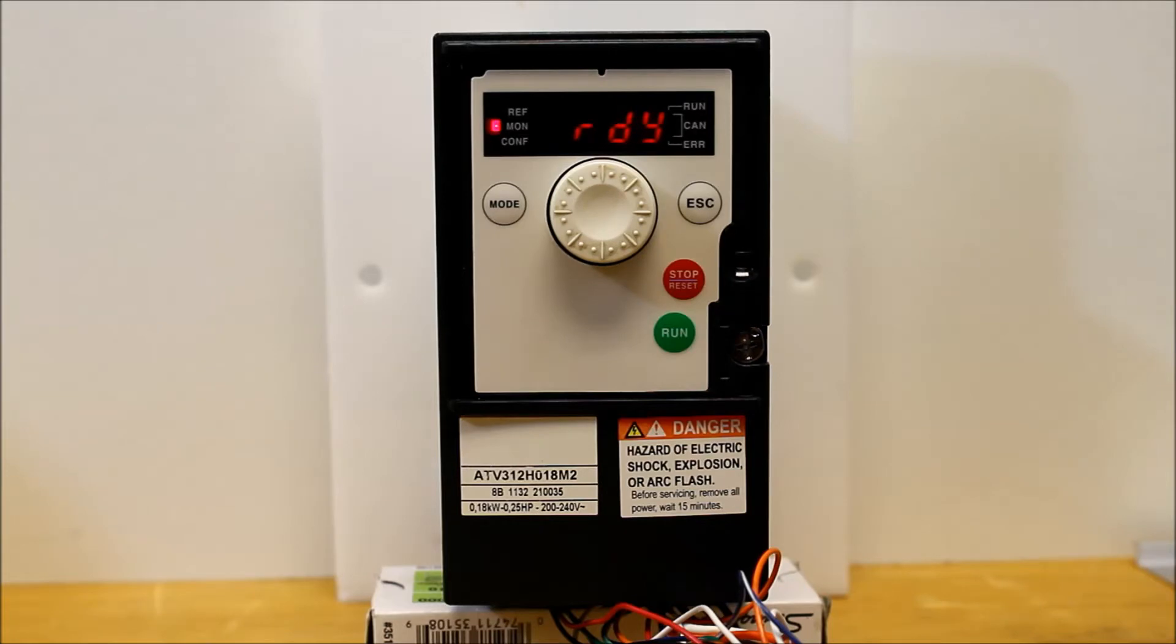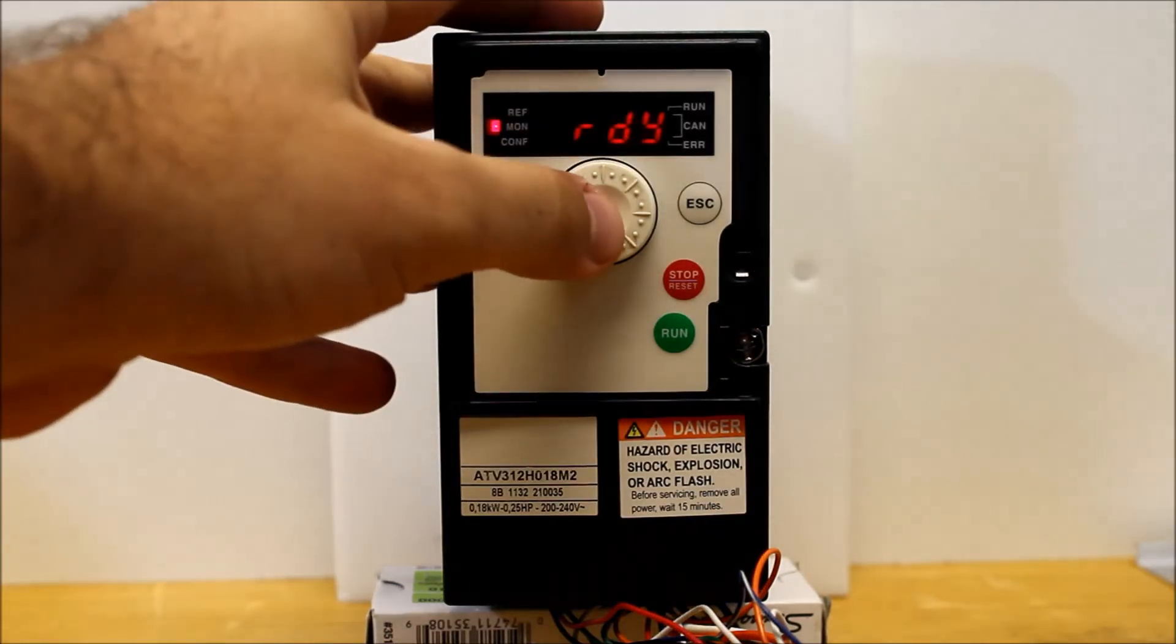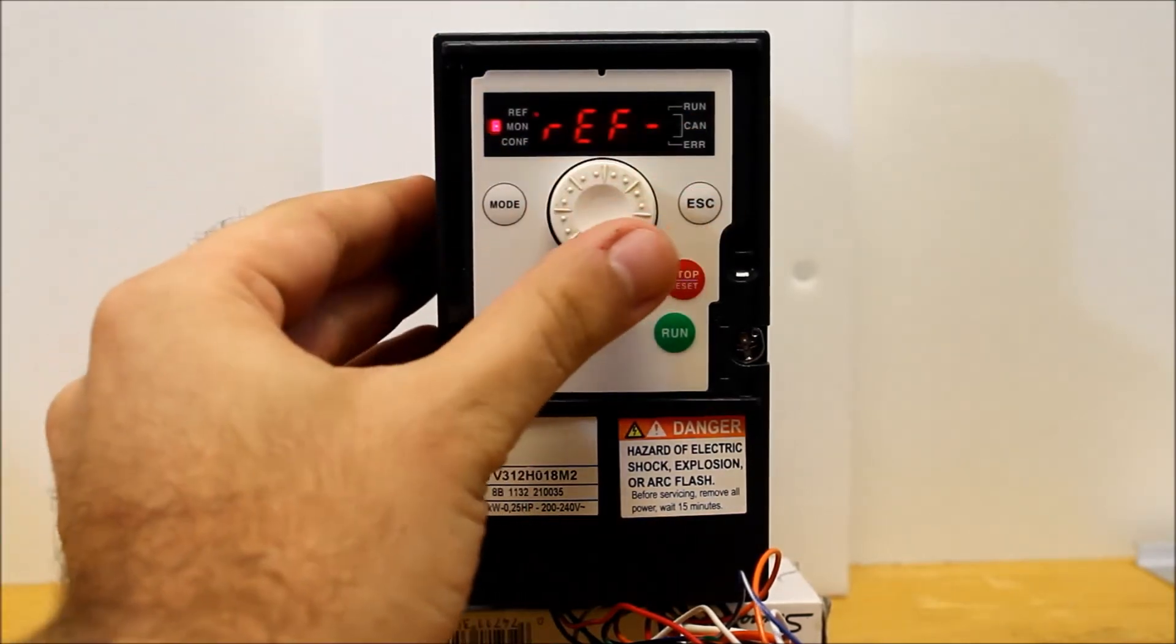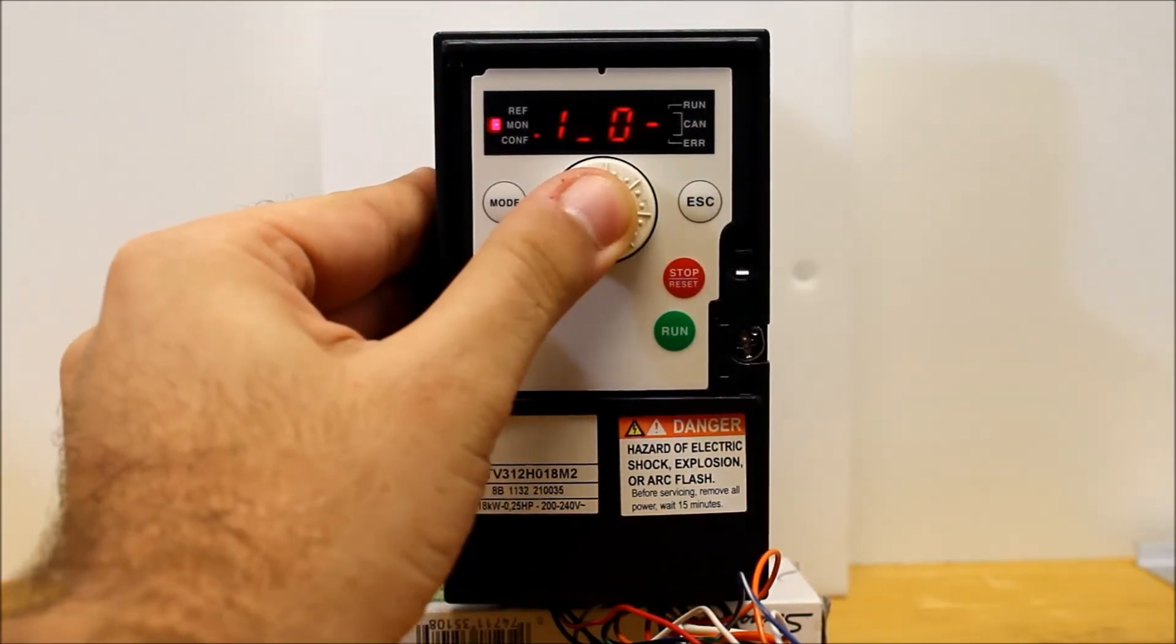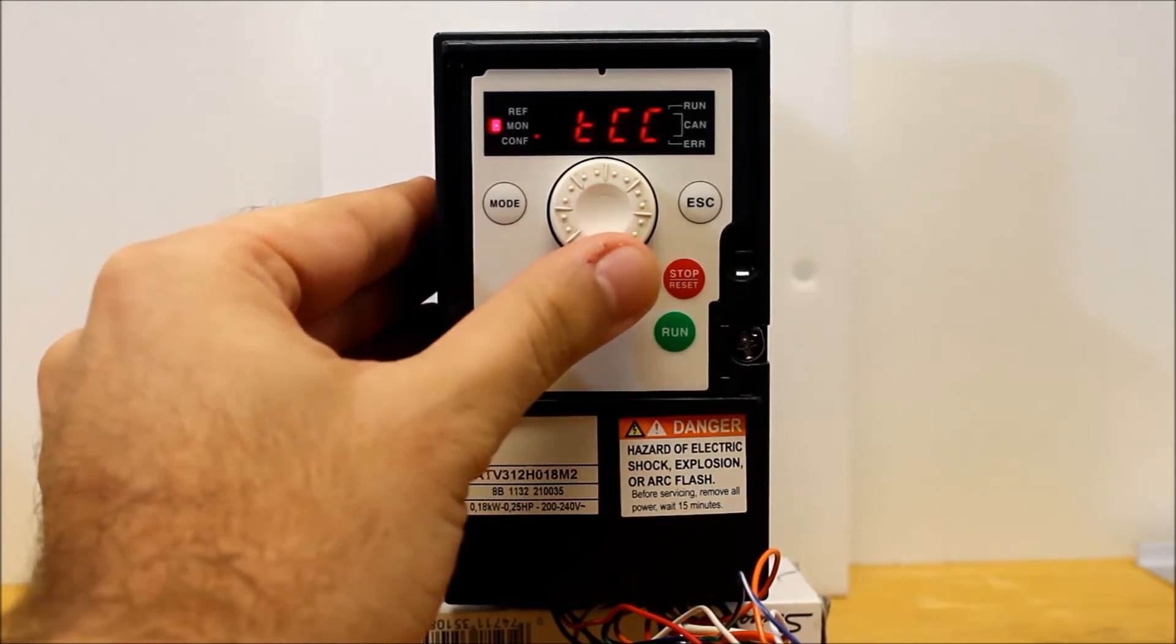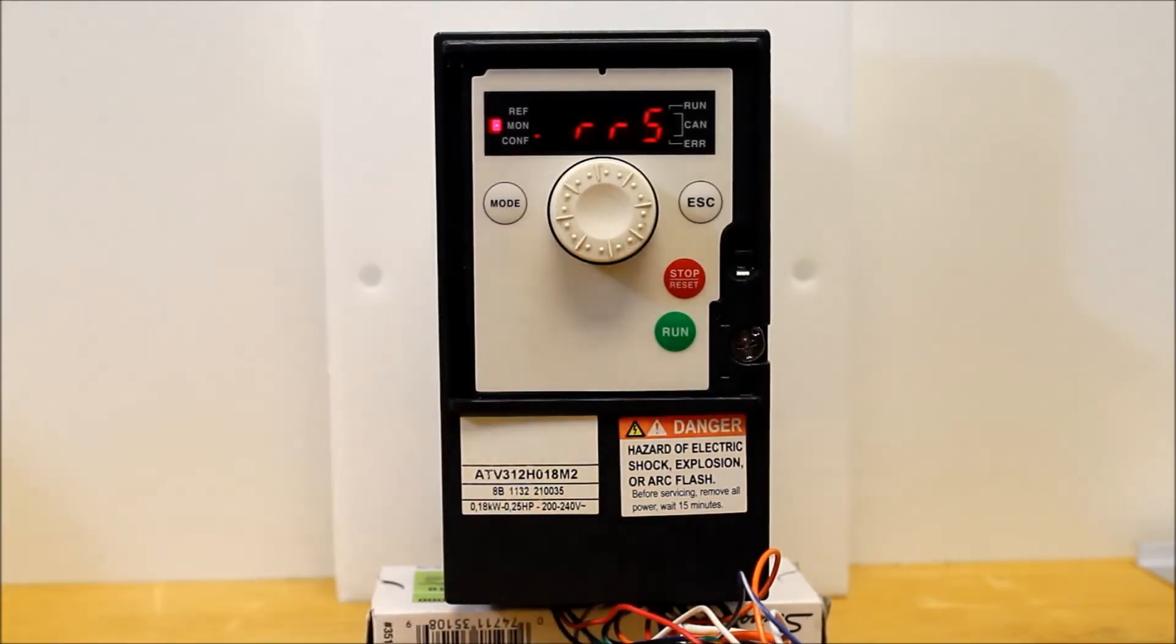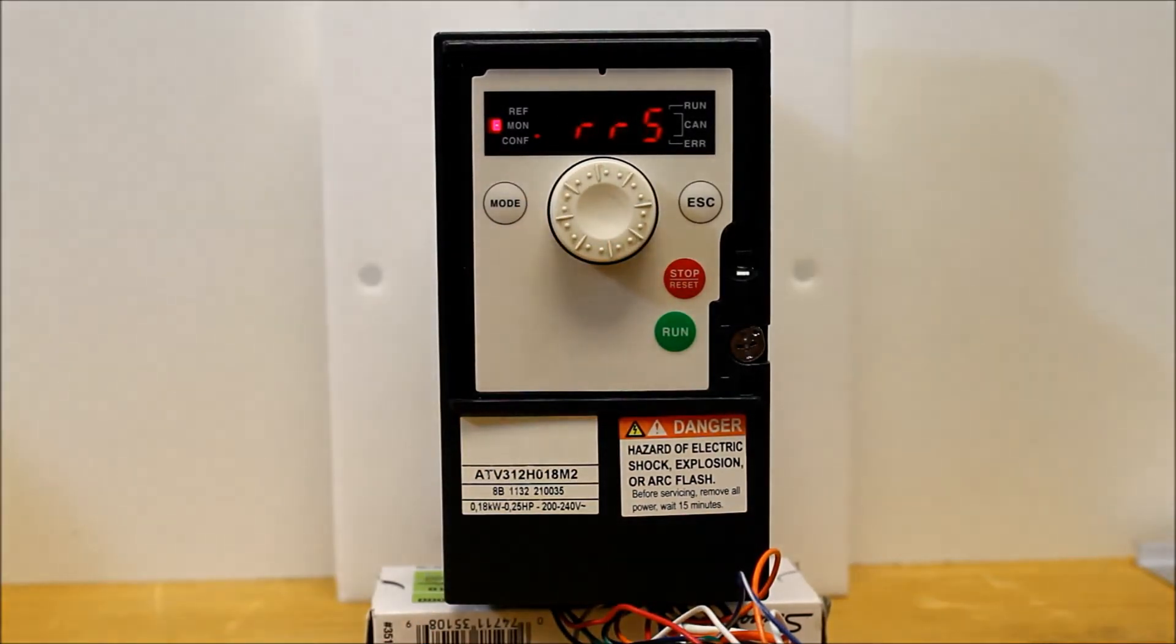So the way that will work is you want to go ahead and enter on your display in your main menu. And you want to scroll down to the I.O. menu. And you want to scroll down to RR5. This is your reverse parameter.